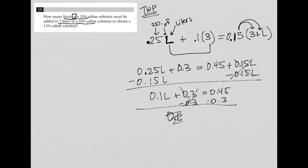So 0.1L is equal to 0.15, right? 0.45 minus 0.3. And I can then divide by 0.1 on both sides.